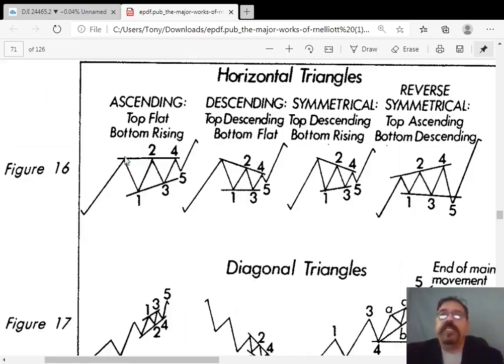These corrections here, the most common are these type, these first three. And these are called contracting triangles. In a contracting triangle, the first wave is the biggest and each subsequent wave gets smaller and smaller. And we usually label these because they're the corrections, we label them as A, B, C, D, E, just for confusion. So they're not the same as expanding waves that are 1, 2, 3, 4, 5.